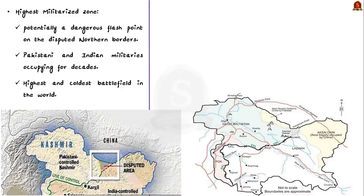Most importantly, the region is potentially a dangerous flashpoint on the disputed northern borders of our country. Flashpoint means a place where violence flares up. Because of this, the glacier region is the highest militarized zone in the world. The Pakistani military and Indian military have been occupying the Siachen Glacier and surrounding regions for decades now, and that is why it is often referred to as the highest and coldest battlefield in the world.